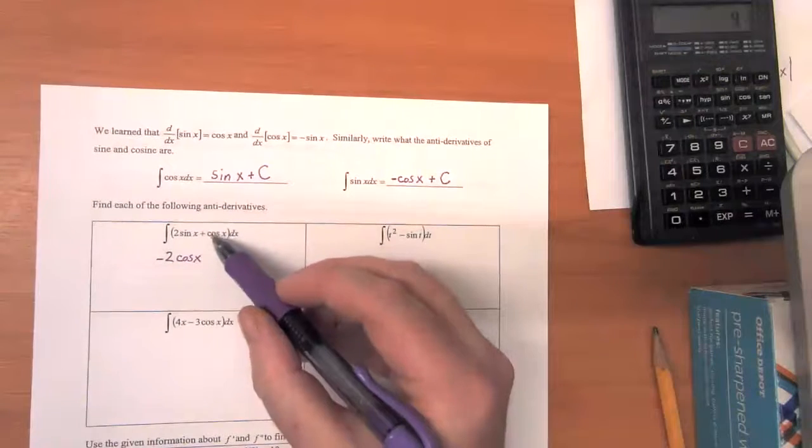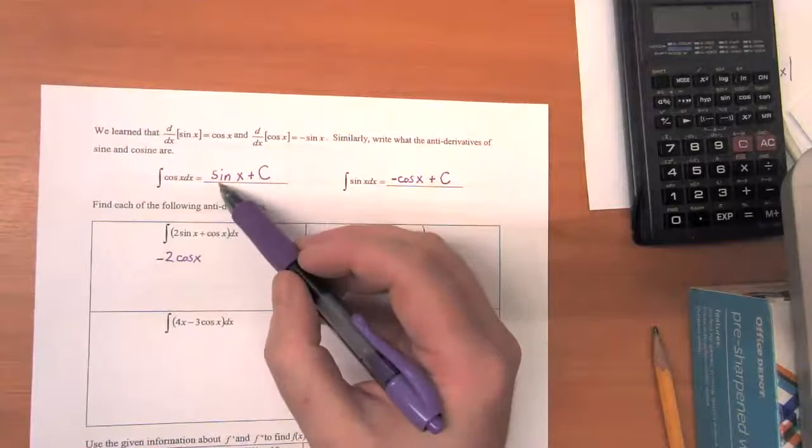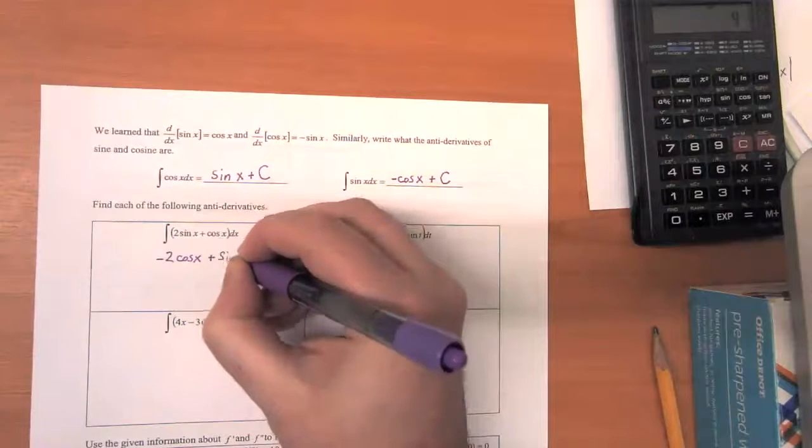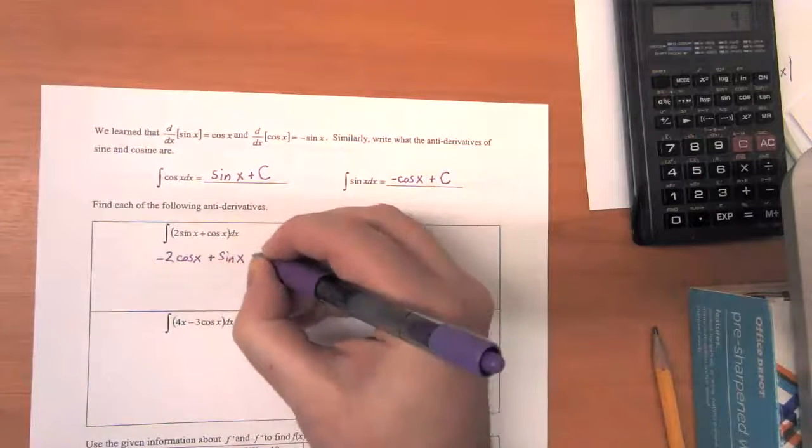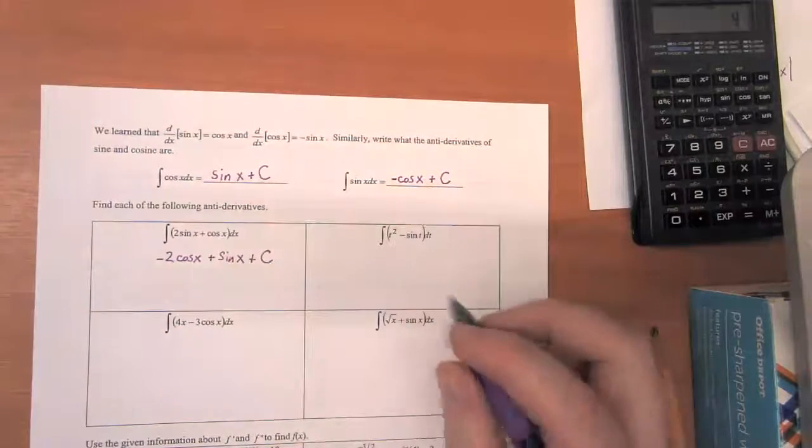So the antiderivative of 2sin(x) is going to have to be -2cos(x). And then the antiderivative of cos(x) is sin(x). And then we're going to add in this constant term of C as always.